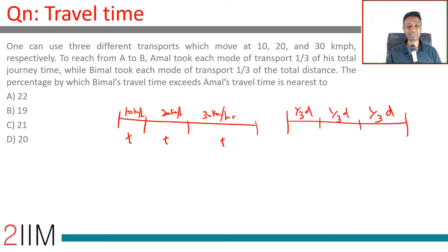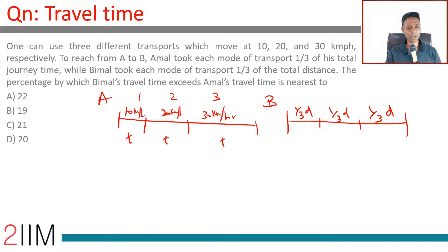Since Amal travels at three different speeds for equal time intervals, the distances covered would be in the ratio of 1:2:3. This is Amal's case. The question asks for the percentage by which Bimal's travel time exceeds Amal's travel time.